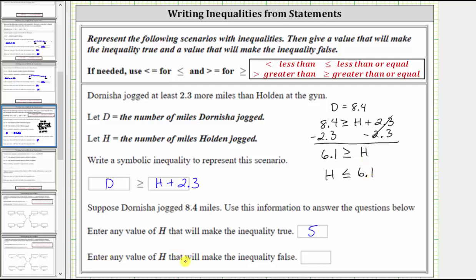Finally, enter any value of H that will make the inequality false. The inequality is false when H is not less than or equal to 6.1, which means H would be greater than 6.1.